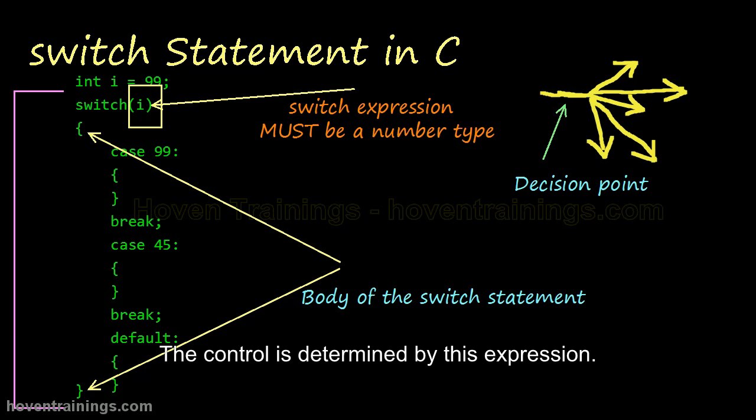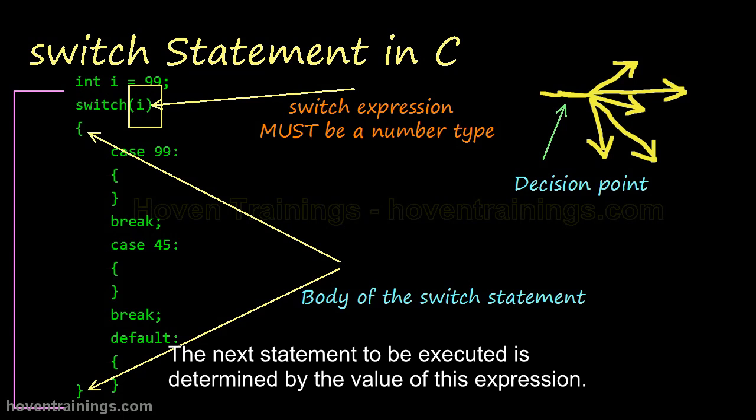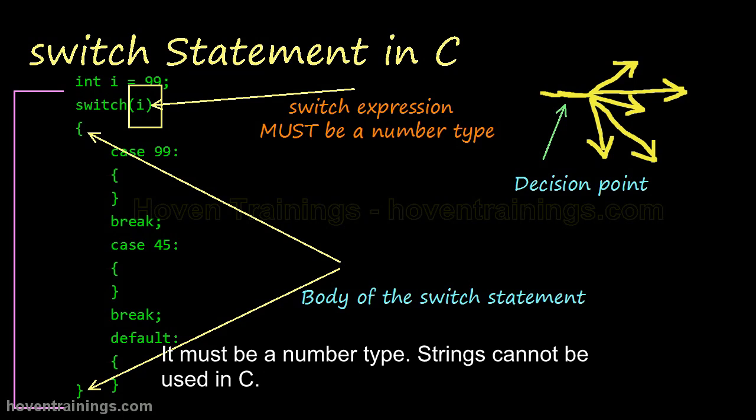The control is determined by this expression. It is called the switch expression. The next statement to be executed is determined by the value of this expression. It must be a number type. Strings cannot be used in C.